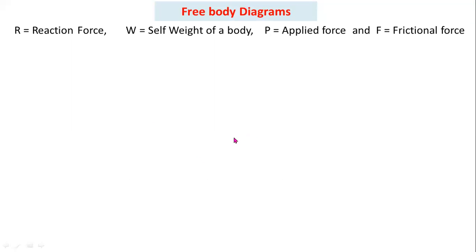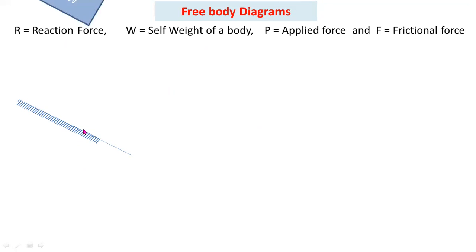Before going into the problems, first of all, you have to know the free-body diagrams for inclined planes. Here, capital R is the reaction force, W is the self-weight of your body, P is the applied force, and F is the frictional force. This is a rough inclined plane, and for rough planes you have to consider friction.